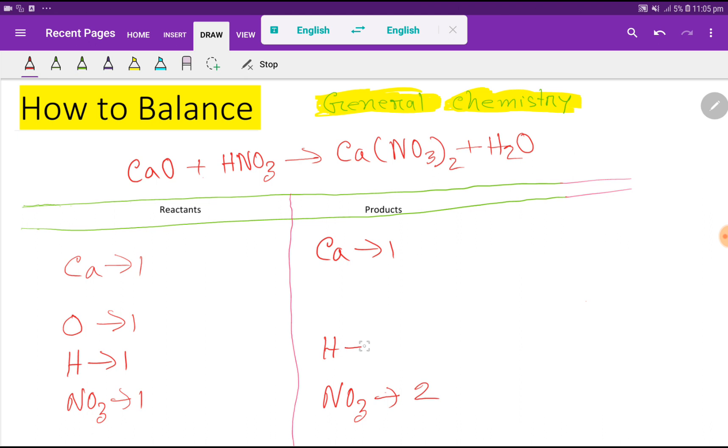Then here we have NO3, that is nitrate polyatomic ion which is two, and here we have hydrogen atom which is two and oxygen which is one.